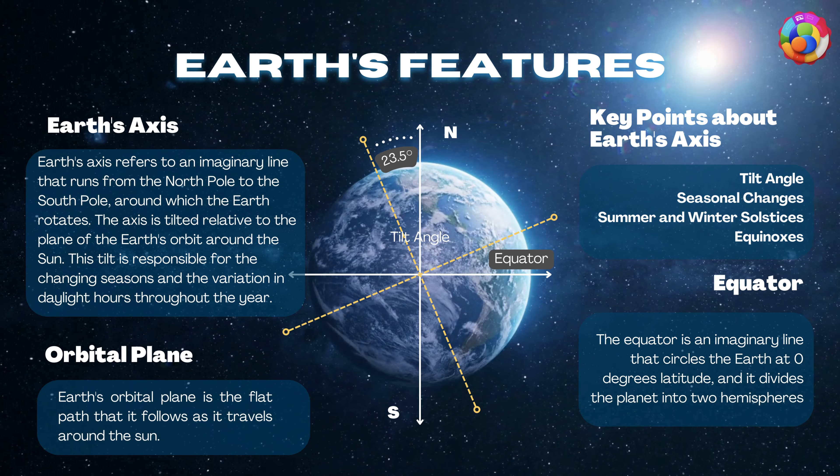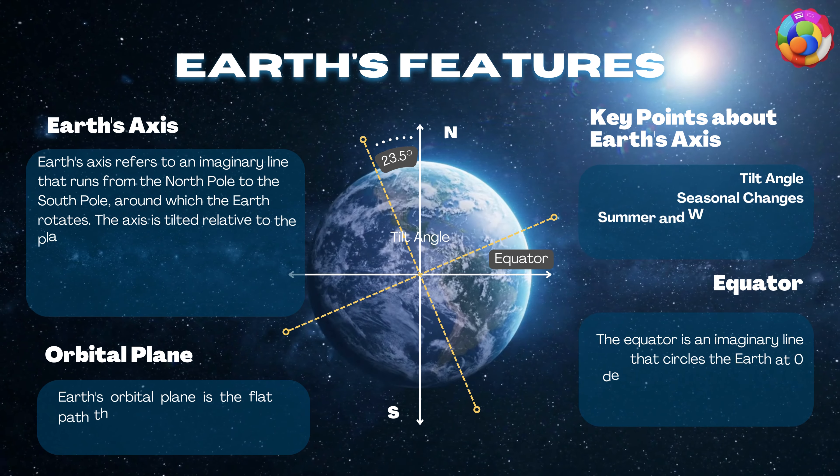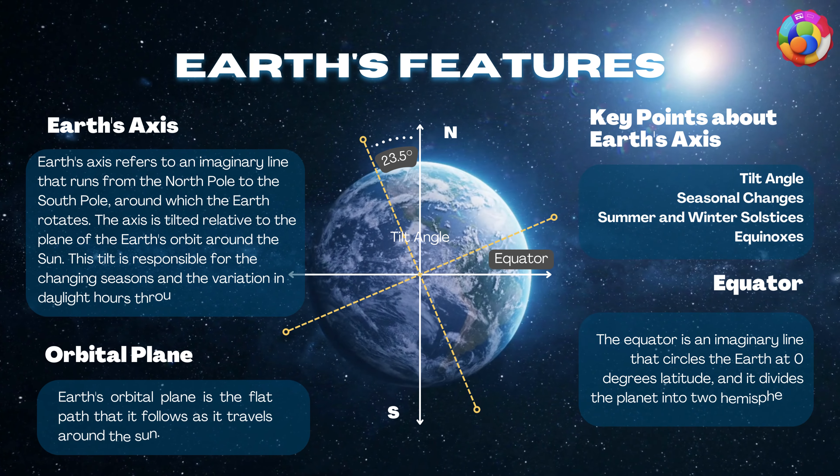Equator: The equator is an imaginary line that circles the Earth at zero degrees latitude, and it divides the planet into two hemispheres.